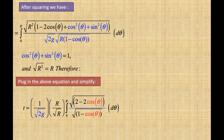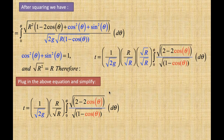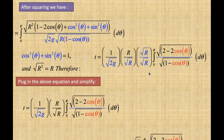We took the square root of r squared, which is r, and pulled it out. In order to simplify r over the square root of r, we multiply top and bottom by the square root of r. Square root of r times square root of r equals r, so those r's cancel, leaving the square root of r at the top.